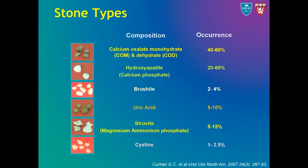Now let's go over the different stone types. Urinary stones are composed of a combination of both organic and inorganic crystals and proteins. Calcium-based stones, which include calcium oxalate and calcium phosphate, account for nearly 70 to 80% of all stones. Struvite stones composed of magnesium ammonium phosphate account for 5 to 15%, and uric acid stones occurring in acidic urine constitute about 5 to 10%. Other types including cystine, xanthine, protein matrix stones, and drug-induced calculi are seen in less than 5% of cases.